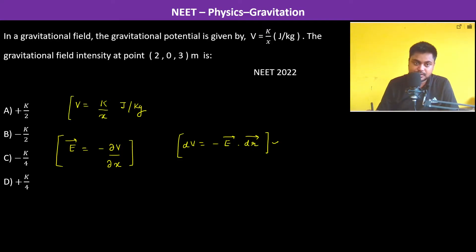Potential is given and what has to be found out is the field. So therefore we will be using this formula. So therefore the field is going to be -dV/dx, so therefore -k/x...